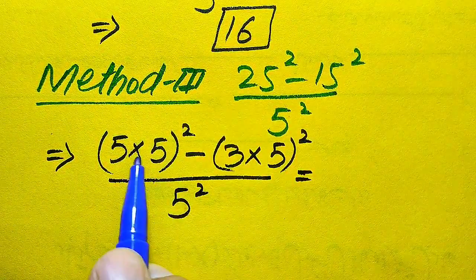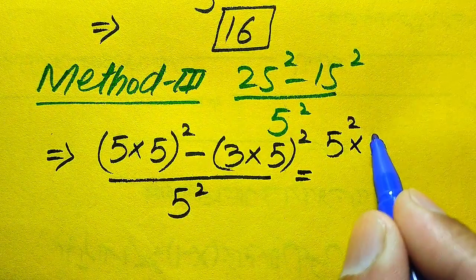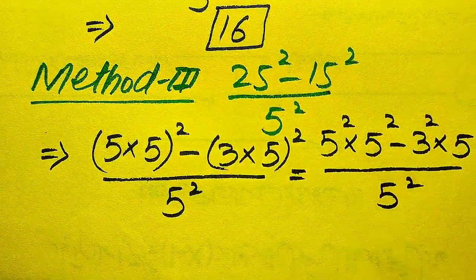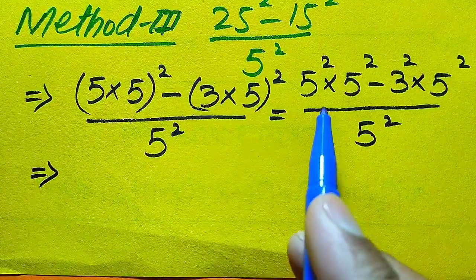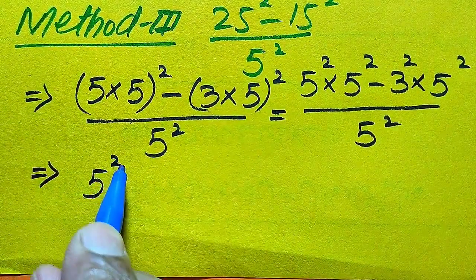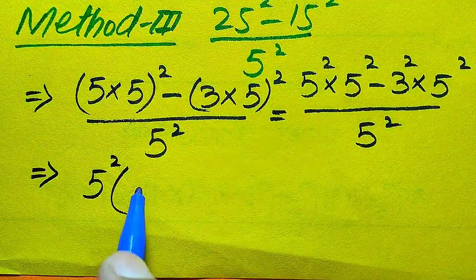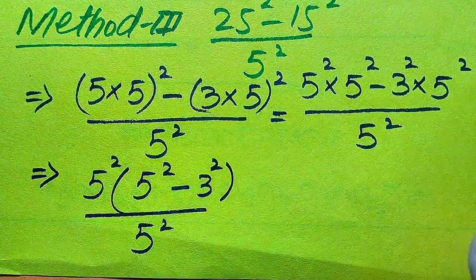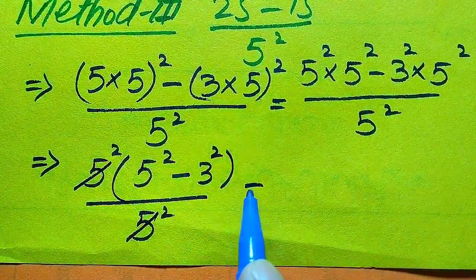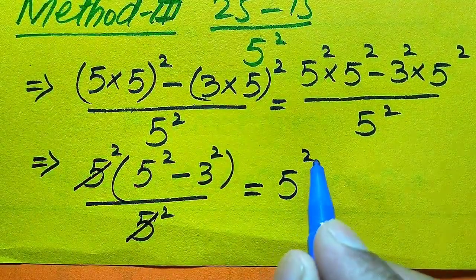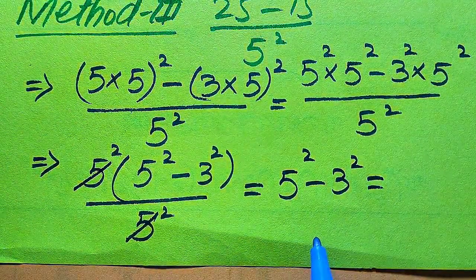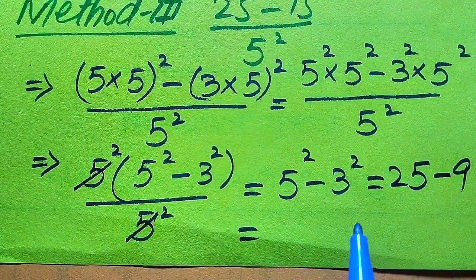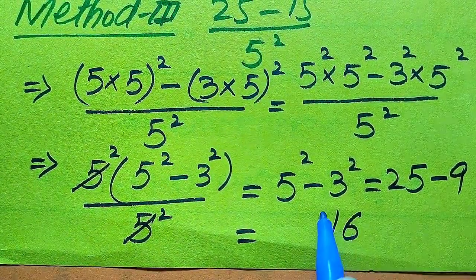Applying the square separately on both values, it becomes 5² multiplied by 5², minus 3² multiplied by 5², divided by 5². In the numerator, 5² is a common term, so we take out the common 5²: we get 5²(5² minus 3²), divided by 5². The 5² cancels out, leaving 5² minus 3², which is 25 minus 9 equals 16.